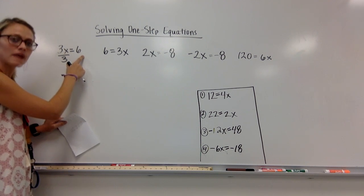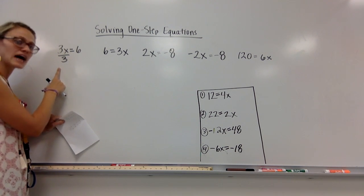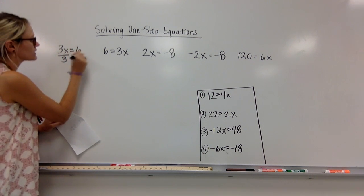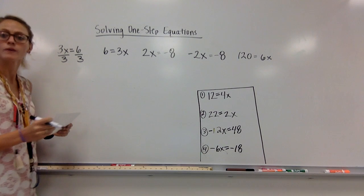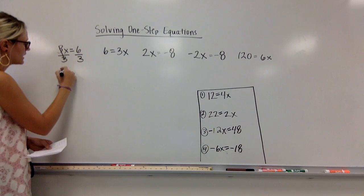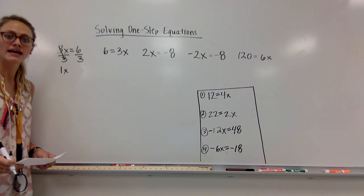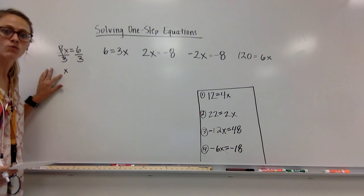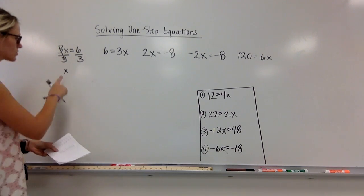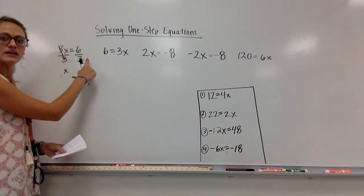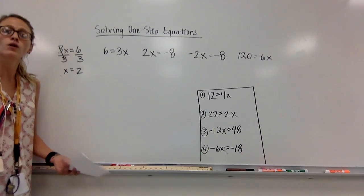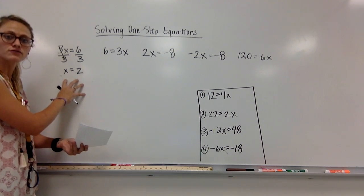You have to. It's like balancing an equation — whatever you do on one side, you have to do on the other side. So I've divided this side by 3, therefore I'm going to divide my 6 by 3. 3 divided by 3 is just 1, so I'm left with 1x. I don't need that 1 — I've got x. x is what we're solving for. 6 divided by 3 is 2.